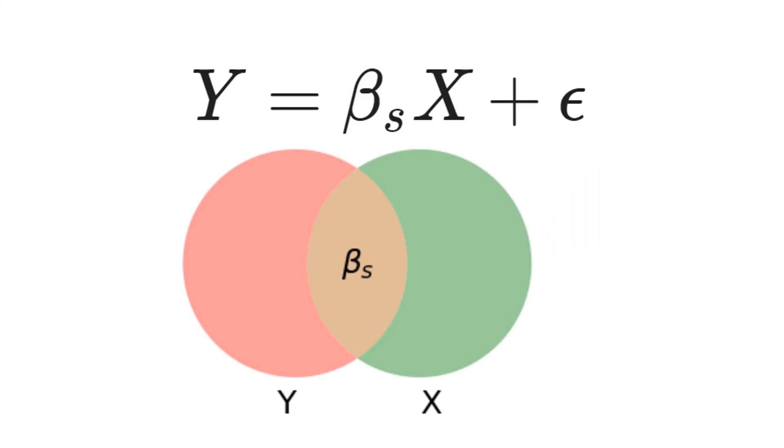Let's use a Venn diagram to represent the regression. The green area represents X and the red area represents Y. The orange or brown intersection is the variation of X that explains the variation of Y.